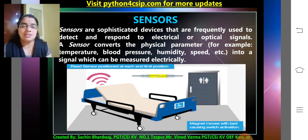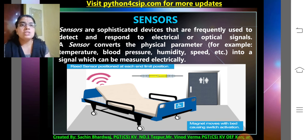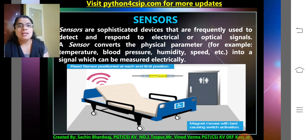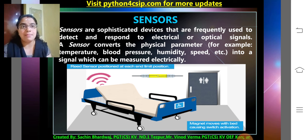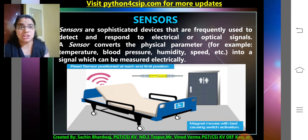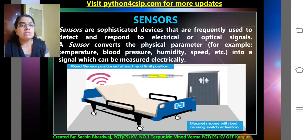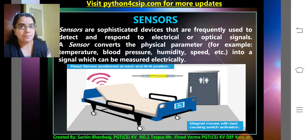Next, we are going to discuss about sensors. Sensors are sophisticated devices that are frequently used to detect and respond to electrical or optical signals. Sensors convert physical parameters — for example, temperature, blood pressure, humidity, speed, etc. — into signals which can be measured electrically.